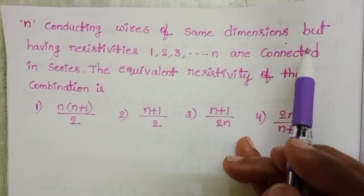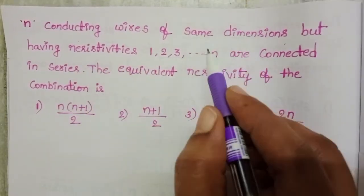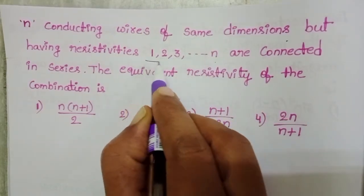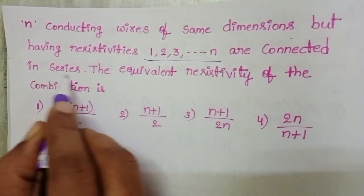N conducting wires of same dimensions but having resistivities 1, 2, 3 and so on N are connected in series.